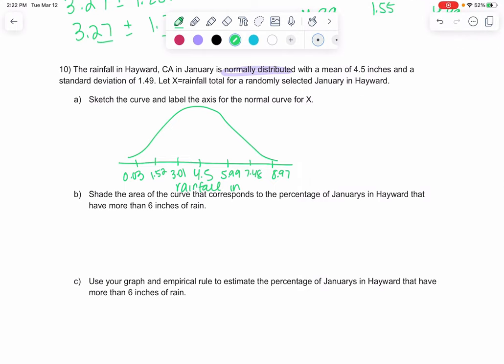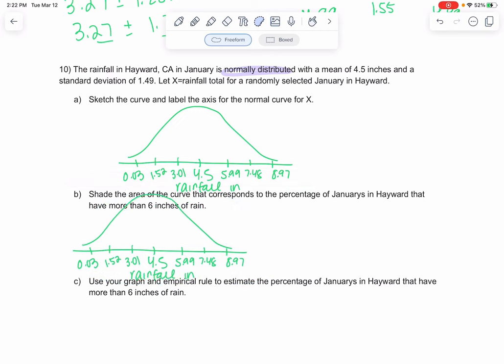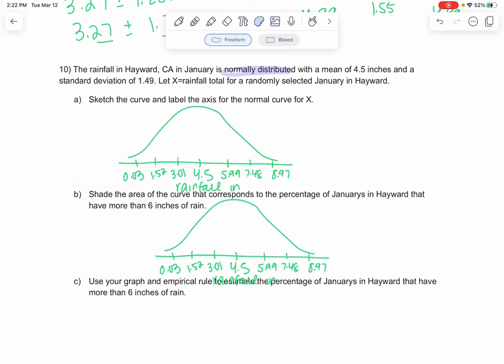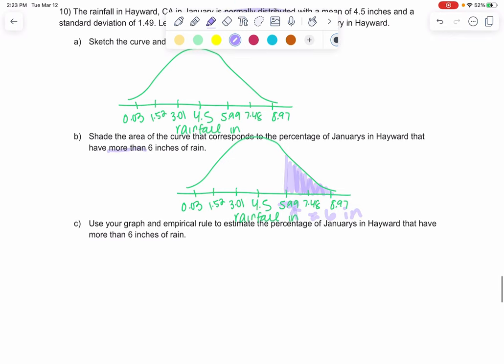We want to shade the area that corresponds to more than 6 inches of rain. There isn't 6 inches, but I see 5.99, and to me that's close enough to 6. More than means to the right. Now we're going to use the empirical rule to estimate the percentage of Januaries that have this much rain. The empirical rule, negative 1 to 1 was 68%.